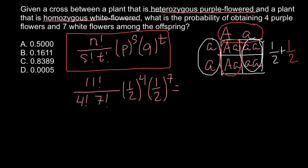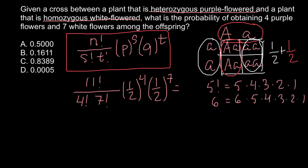Now let's do the calculations. It will be easy if you know what factorials are — it's very simple. For example, factorial 5 is just a regression of the number multiplied by itself: 5 factorial equals 5 × 4 × 3 × 2 × 1. And factorial 6 would be 6 × 5 × 4 × 3 × 2 × 1. So, 11 factorial would be 11 × 10 × 9 × 8 × 7 × 6 × 5 × 4 × 3 × 2 × 1.